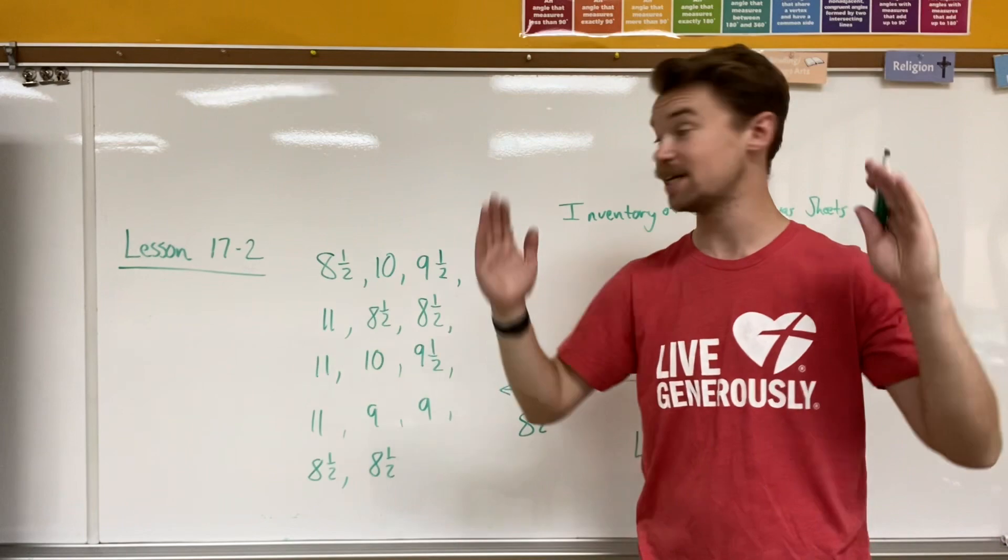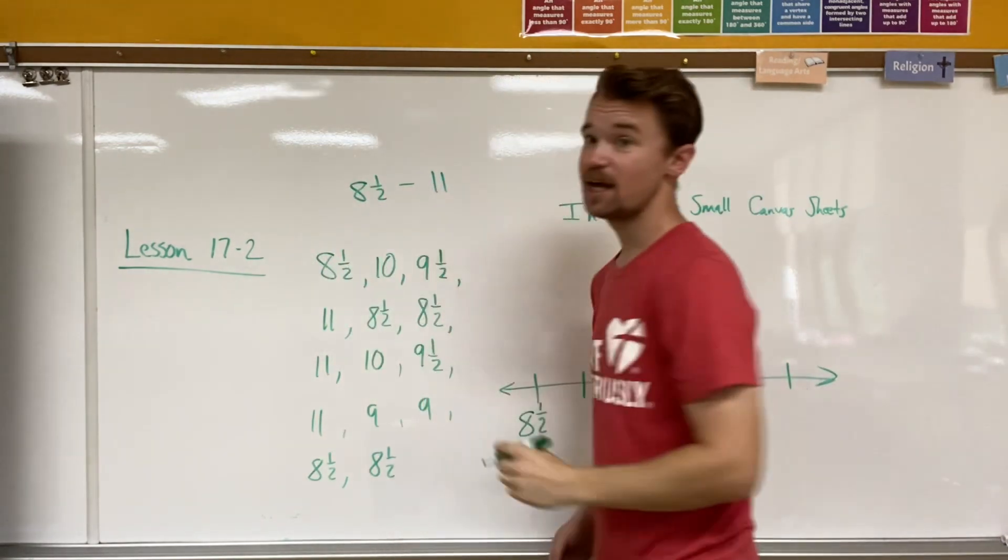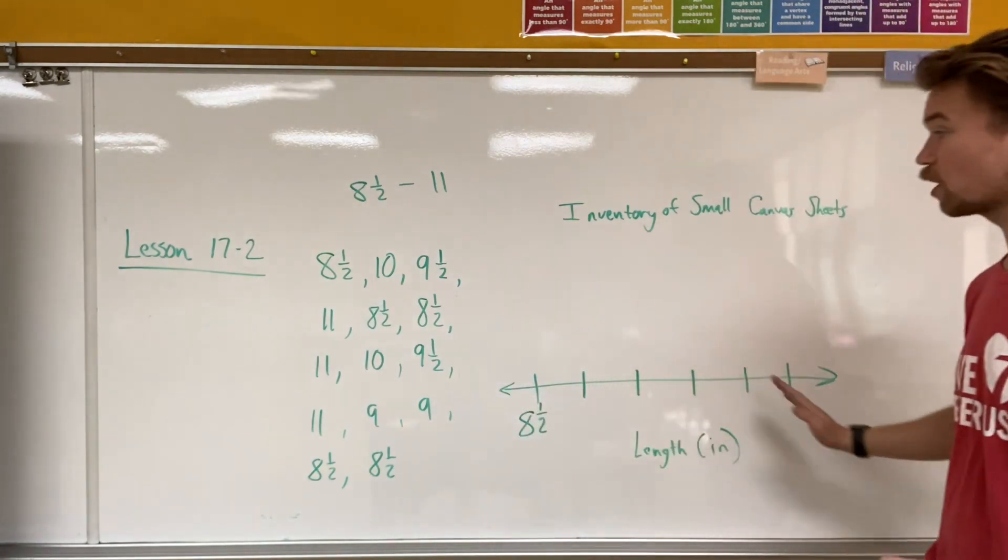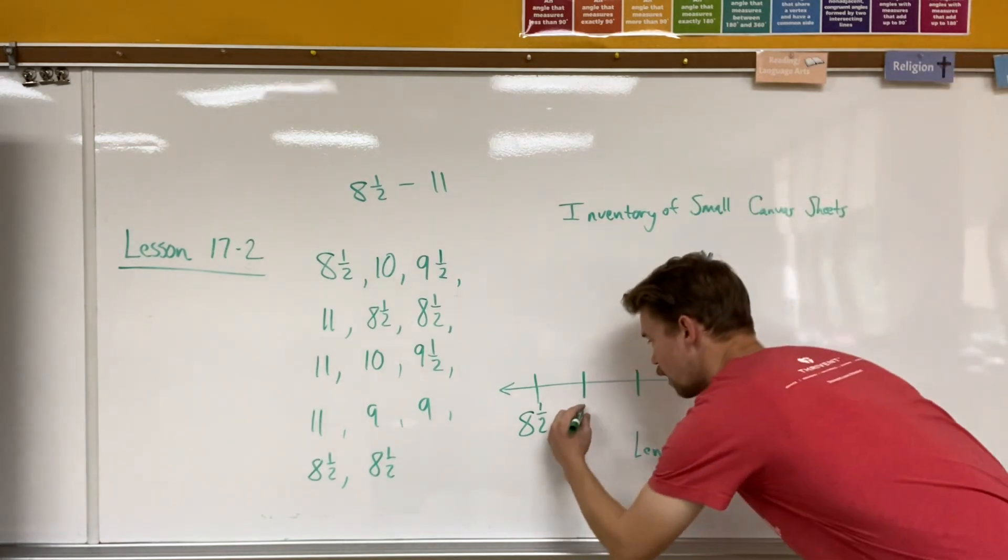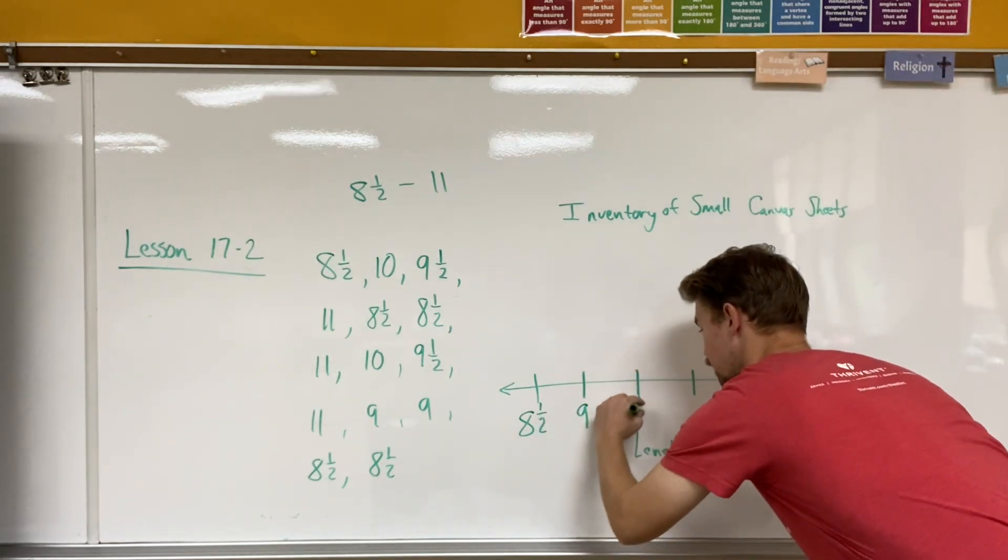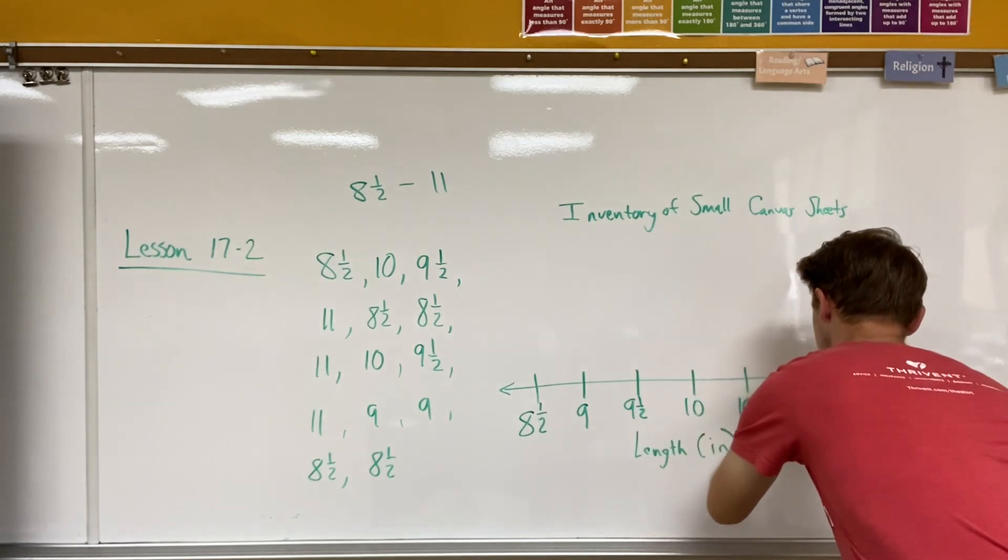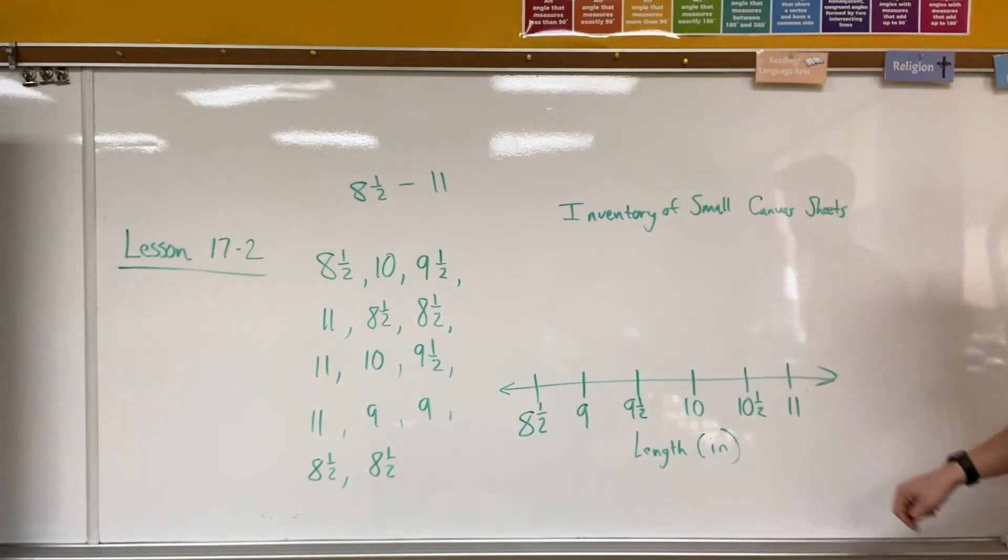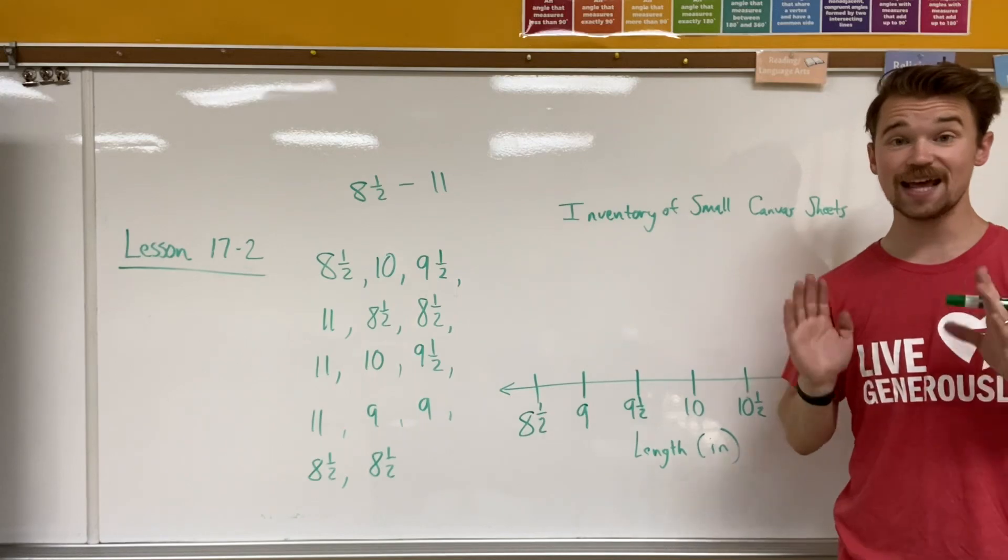So my smallest one is eight and a half. My largest one is 11. Now I need to figure out the interval. So interval, how much I go up by, I think my interval probably should be half inches. That way we can go nine, nine and a half, 10, 10 and a half, and 11. And that way I have my scale from eight and a half to 11 perfectly laid out. And my intervals, nice, even half inches.